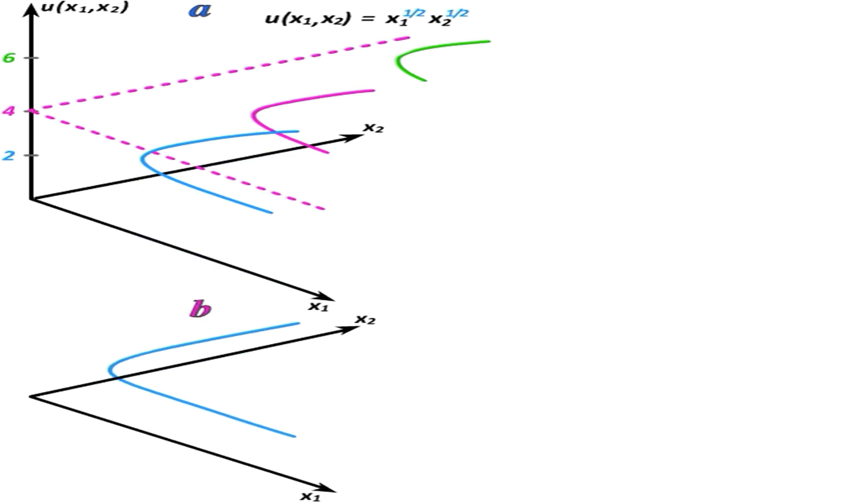If we now strip away the function and leave only the portions that intersected with the slices at utility levels 2, 4, and 6, we get three indifference curves floating in the air. We can transfer them into the x1, x2 plane by redrawing that plane and bringing down each of the three curves.